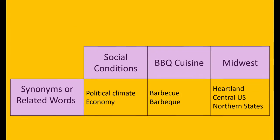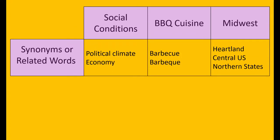The first step is brainstorming related terms or synonyms for the main concepts of your topic. This could include alternate spellings of keywords, closely related concepts, or terms with the same meaning as your starting keywords. For my topic, I could add different spellings of the word barbecue, or heartland as a synonym for the Midwest.